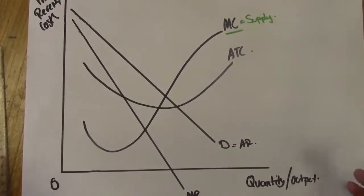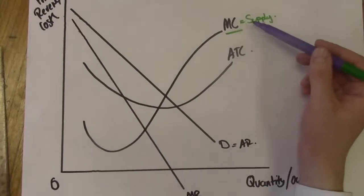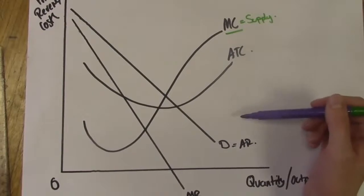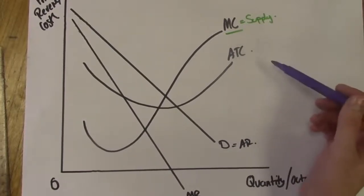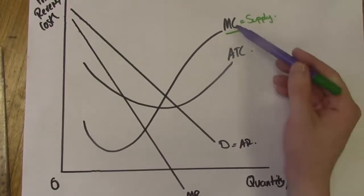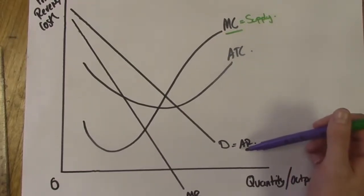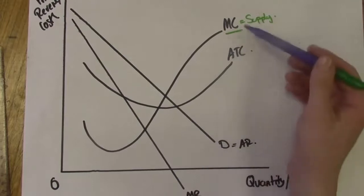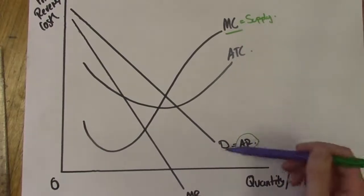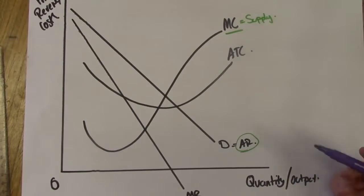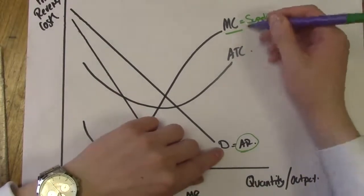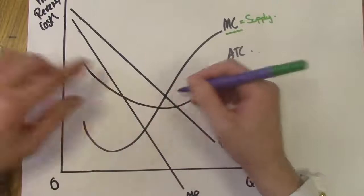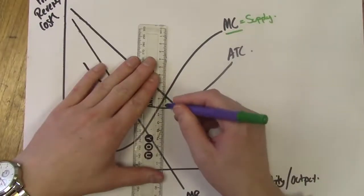We see that through the MC curve, which also equals our supply curve. Going back to basic AS economics: equilibrium — where goods and services are perfectly allocated — occurs whenever supply equals demand, whenever both the firm and the customer are satisfied. So for allocative efficiency, MC equals AR. For profit maximization, MC equals MR.